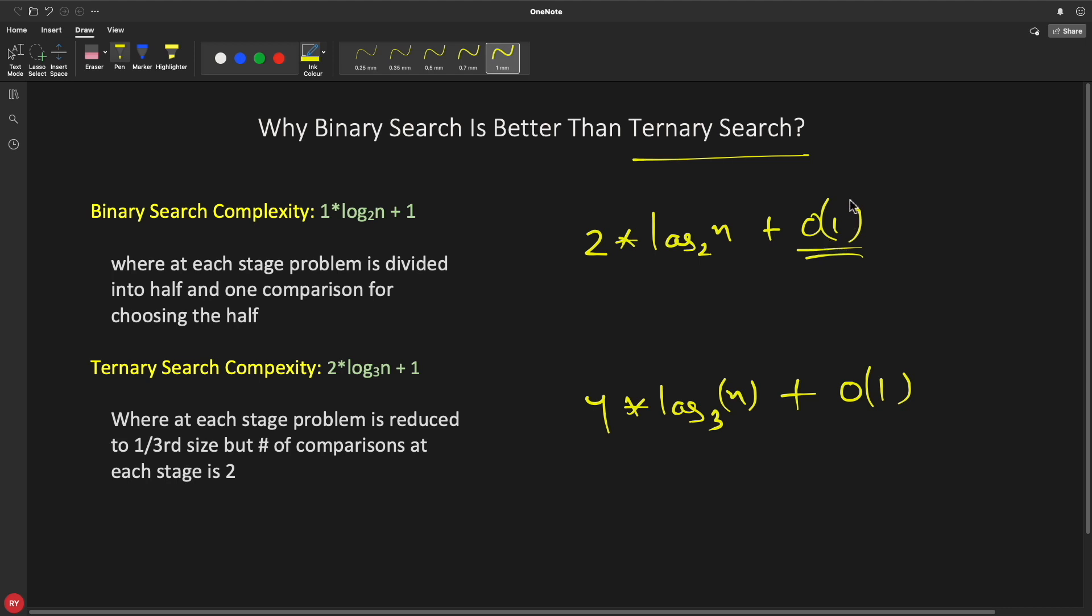So this is not in consideration, we can remove this. Now you are going to compare these two. If you will do little bit of math, this would get converted into log₂ n and this will be like 2 log₃ n. And now we have to compare these two to come up with a solution whether this is good or this is good.